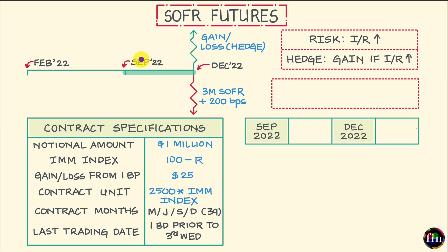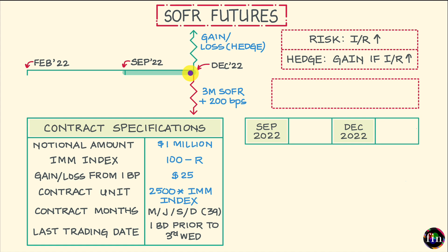For this example, the trading of the September 2022 three-month SOFR futures will go all the way till 20th December 2022 — that's one business day prior to the third Wednesday of the contract delivery month. It's only on that day that we will have the final settlement price for this contract. That final settlement price will be used to work out the last settlement between the long and the short party, so settlement for three-month SOFR futures does not happen at the beginning of the period as with LIBOR, but instead at the end of the period.